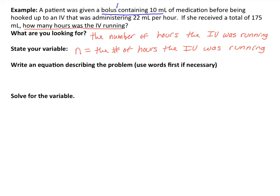And then they were hooked up to an IV that was running at, so an IV then, that was being administered, this is 22 milliliters per hour. And then I'm also told that when this was all done, the patient had 175 milliliters. So, just thinking about this situation, the patient was given a bolus that had some amount of milliliters.